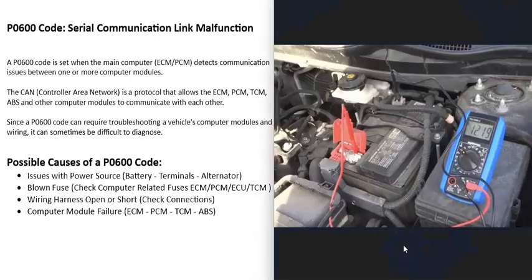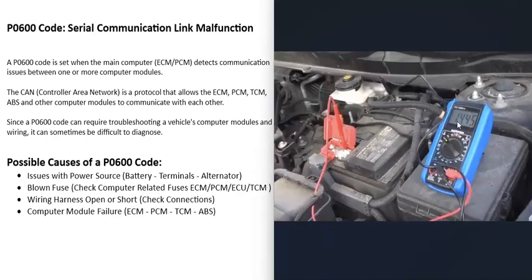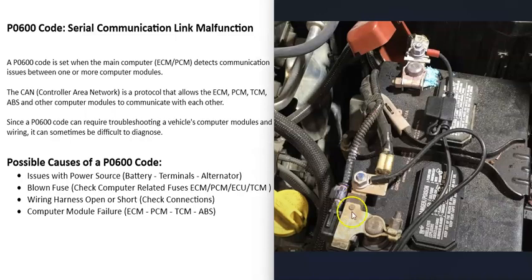If the battery and terminals look good, check the alternator output using a multimeter. With the engine off, the battery voltage should be around 12.2 to 12.7 volts. Start the engine and it should read roughly 13.5 to 14.5 volts at the battery terminals. Some newer vehicles have a smart alternator that varies voltage more, so look up the rated output for your vehicle. Also note that some vehicles have a battery sensor that can cause problems if it fails.